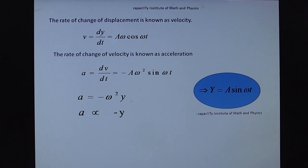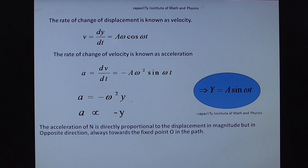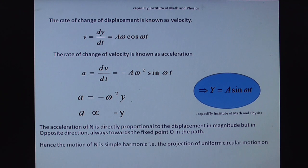Therefore, we can write A is proportional to minus Y. So we have proved this SHM definition. Therefore, the acceleration of N directly proportional to the displacement in magnitude but in opposite direction always towards the fixed point O in the path. Therefore, hence the motion of N is simple harmonic. The projection of uniform circular motion on a diameter is simple harmonic.